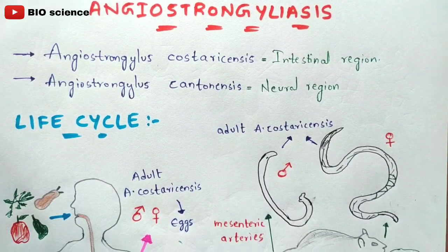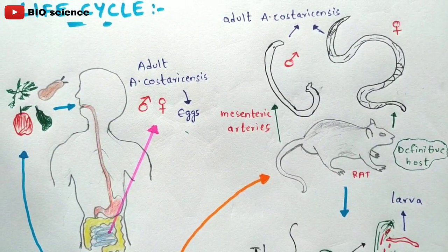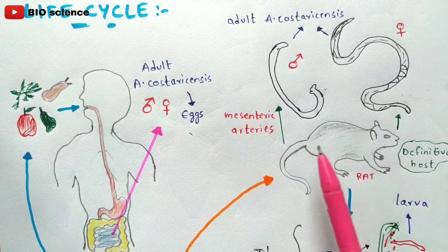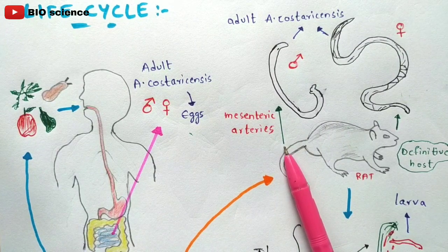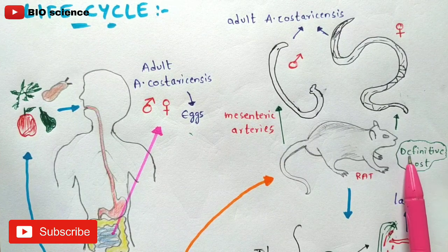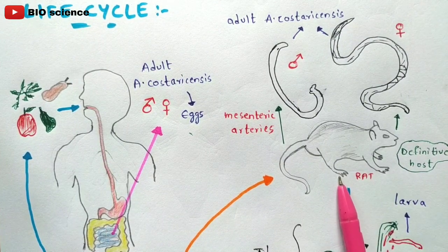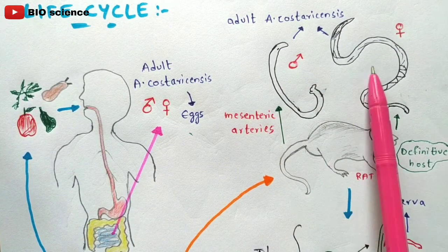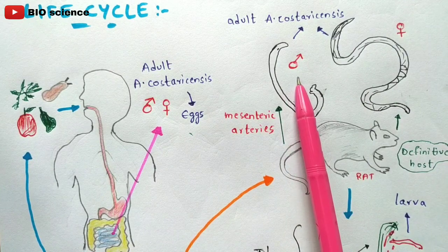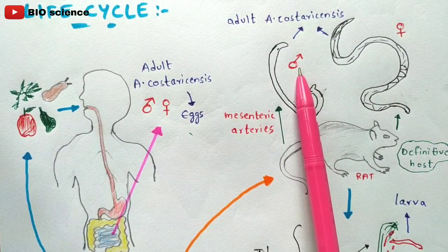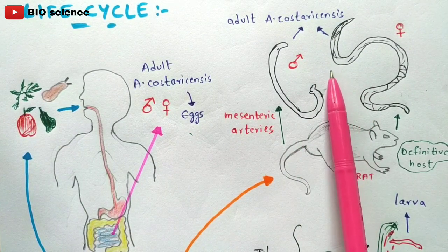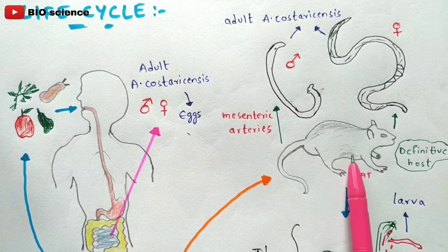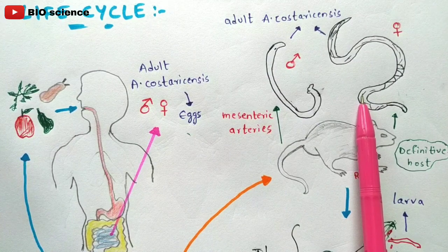The life cycle begins with rodents — for example, rats. The rat is considered the definitive host. Totally three hosts are involved in this life cycle. In the rat, adult worms of Angiostrongylus costaricensis are found in the mesenteric arteries region, near the heart. Both male and female adult worms are present in the arteries of the rat.